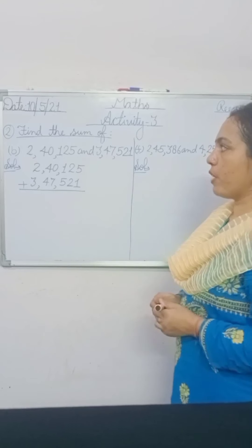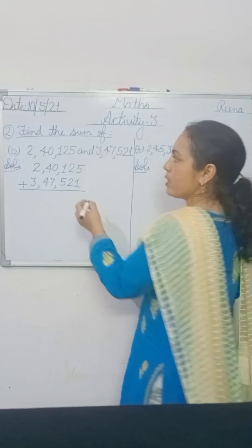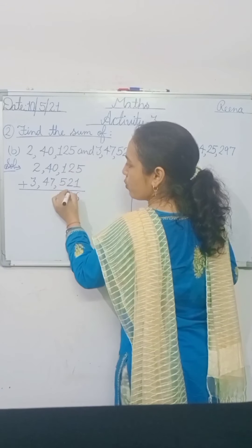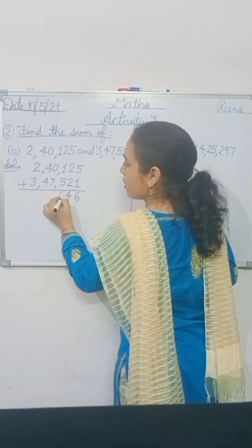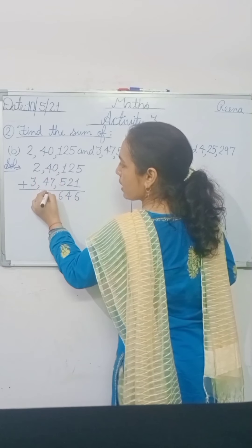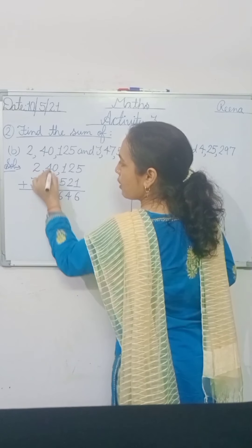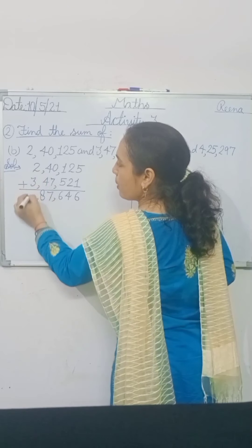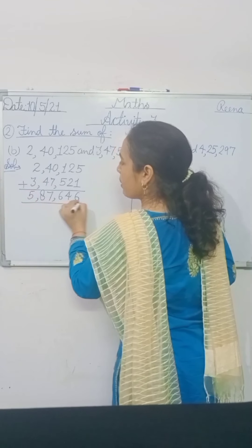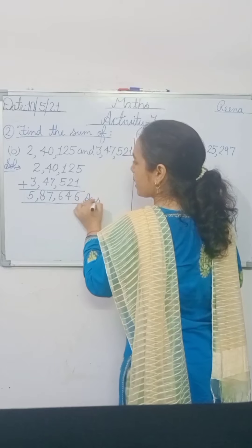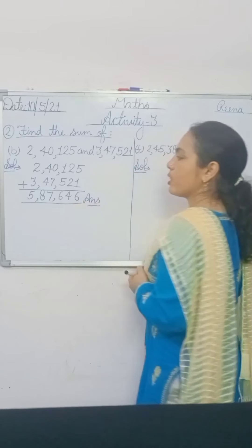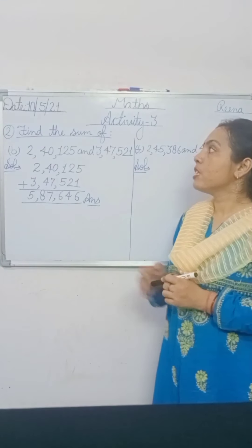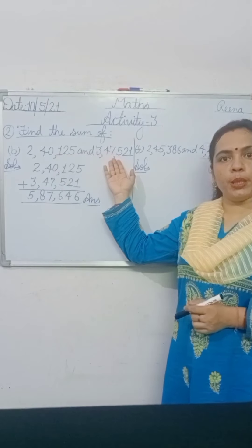5 plus 1 is 6. 2 plus 2 is 4. 5 plus 1 is 6. 0 plus 7 is 7. 4 plus 4 is 8. 3 plus 2 is 5. That means 5,87,646 is the sum of the given numbers.